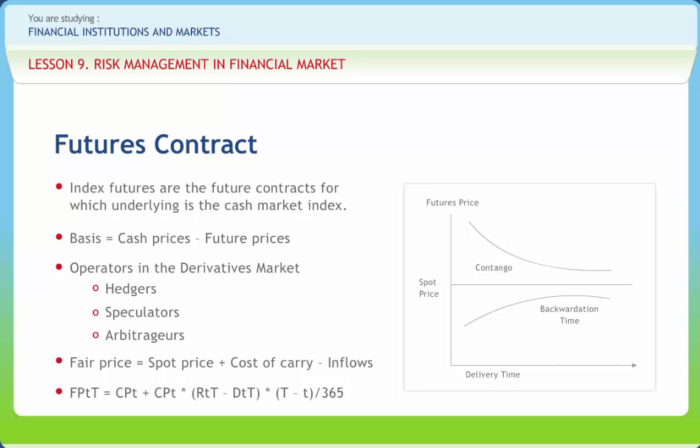If the futures price is greater than the fair price, buy in the cash market and simultaneously sell in the futures market. If the futures price is less than the fair price, then sell in the cash market and simultaneously buy in the futures market.